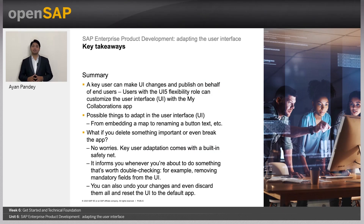Let us conclude with the key takeaways. A key user can make UI changes and publish on behalf of all the end-users. Users with the UI5 Flexibility role can customize the user interface within the MyCollaborations app — from embedding a map to renaming a button text.